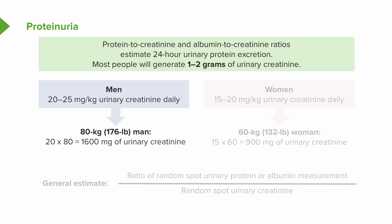To illustrate this: men usually generate somewhere between 20 to 25 milligrams per kilogram of urinary creatinine daily, assuming more muscle mass. So an 80 kilogram man will make about 1,600 milligrams of urinary creatinine. For women, presuming less muscle mass, they generate about 15 to 20 milligrams per kilogram of urinary creatinine daily. A 60 kilogram woman will generate around 900 milligrams of urinary creatinine. So between 900 and 1,600, most people are close to that spectrum of one gram of creatinine daily.